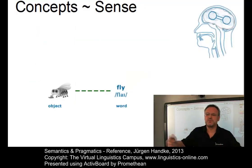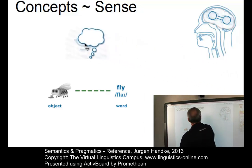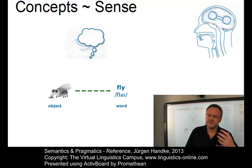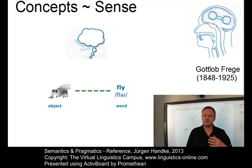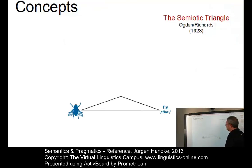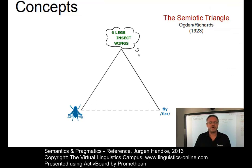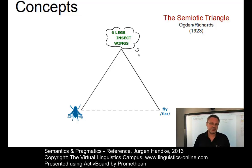Modern semantics has adopted a more complex perspective in which reference is only one dimension of meaning; the other dimension is referred to as sense. The German logician Gottlob Frege, who lived from 1848 to 1925, was the first to distinguish two dimensions of our semantic knowledge of an expression: its sense and its reference — using the German words Sinn and Bedeutung respectively. The modern solution to explaining the nature of word meaning is to define the meaning of a word in terms of the image or concept in the speaker's or hearer's mind. This relationship is best illustrated by means of the semiotic triangle, as introduced by Charles Ogden and Ivor Richards in 1923.